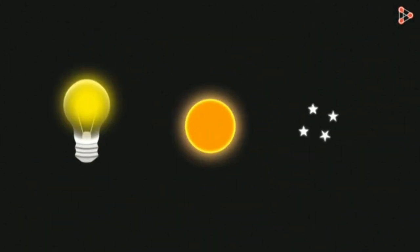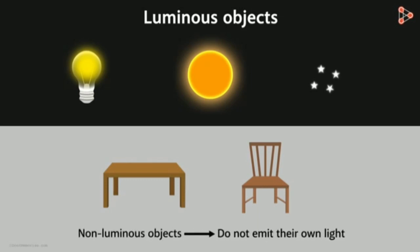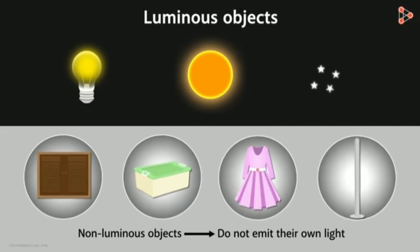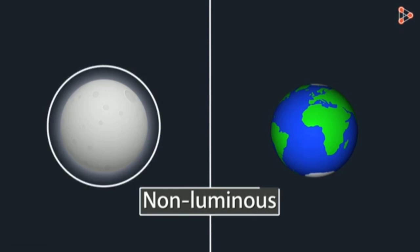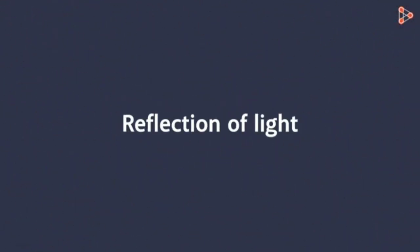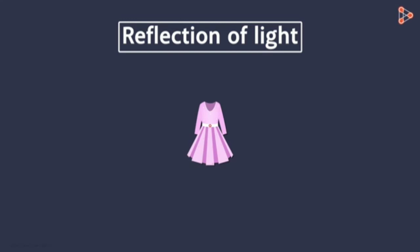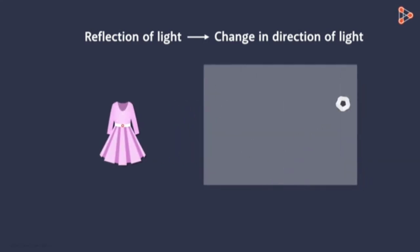Light from a luminous object — such as a bulb, the sun, or stars — is called a luminous object. Non-luminous objects do not emit their own light. For example, planets and the moon are non-luminous subjects. They reflect light from luminous objects.